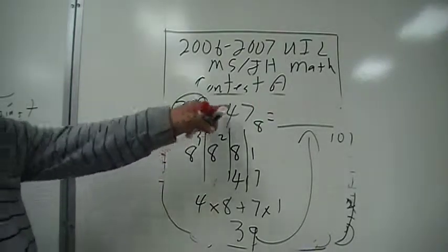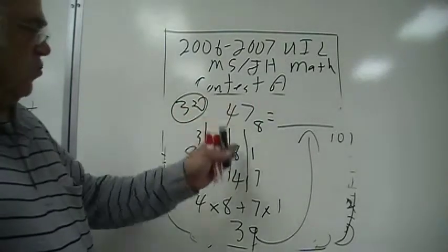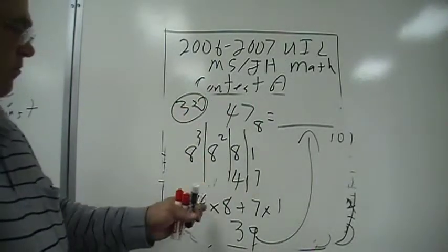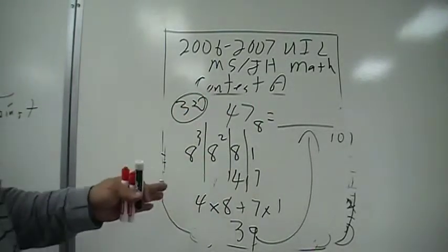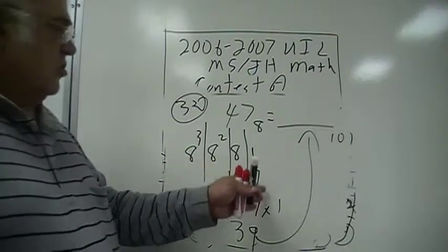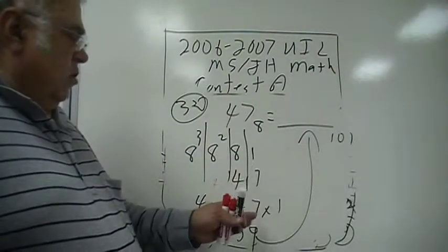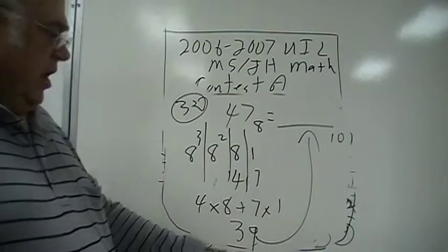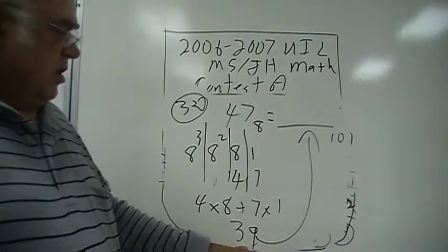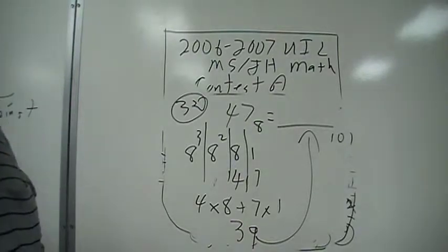And so 47 would be 4 in the 8s column — 4 times 8, that's 32 — plus 7 times 1. So 32 and 7, that's 39. That's the base 10 number for that: 39.